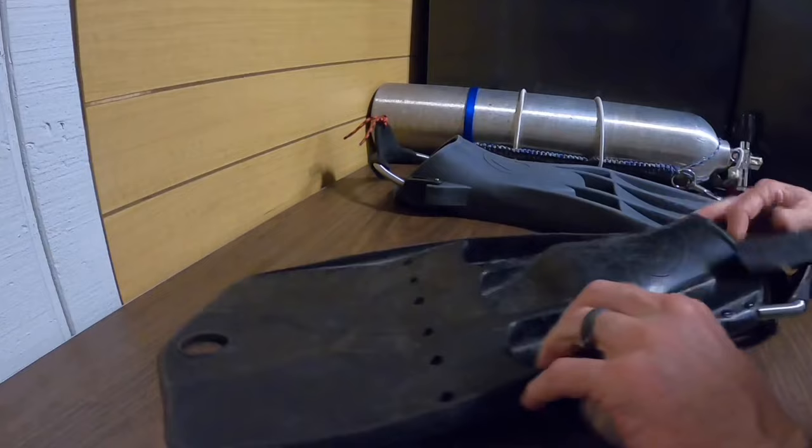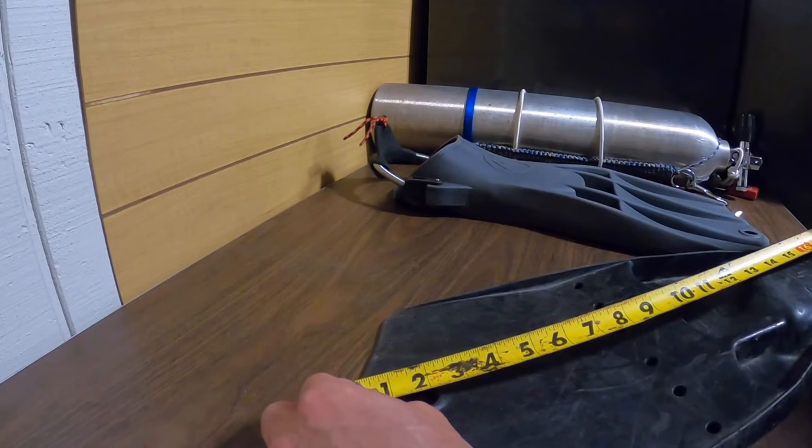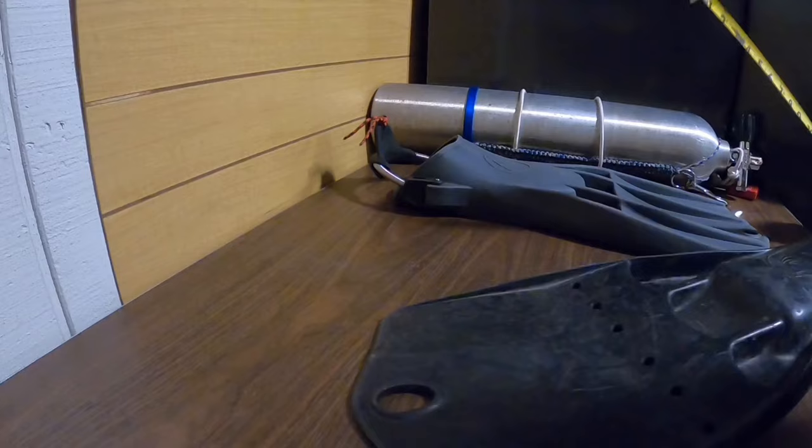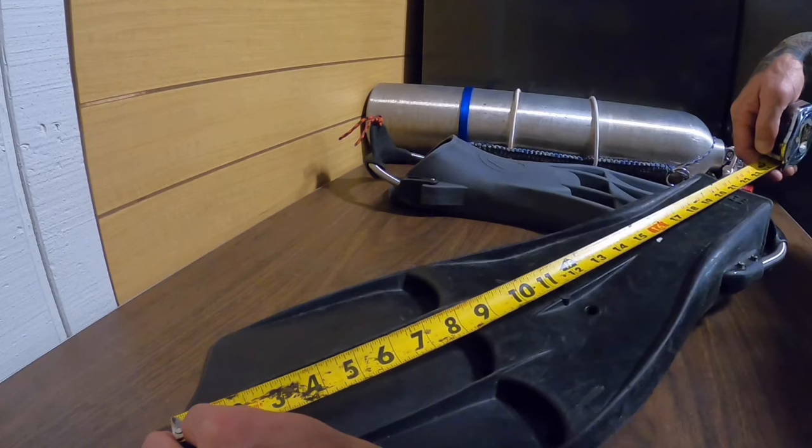Foot pocket with this Deep Six Eddy, let's get that measuring tape, we'll actually take the measurements for you. So blade to the tip of the foot pocket is 12 inches. At the widest point, the blade is 8 and 3/4 inches. The foot pocket, 9 inches. And overall fin length, 21 and 1/8.